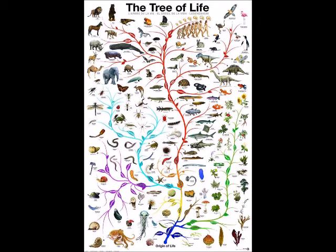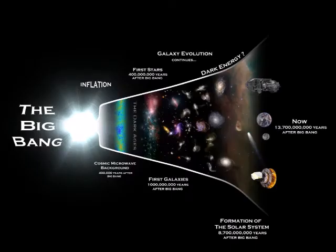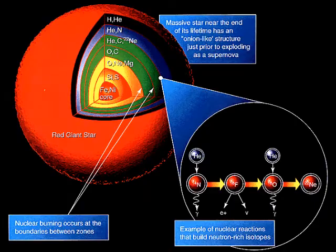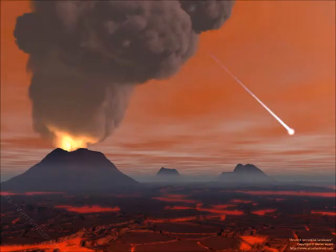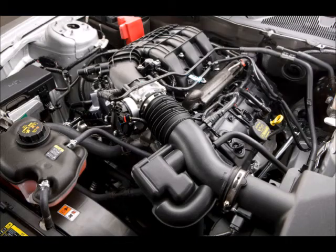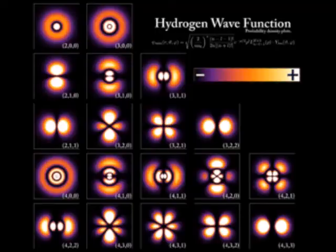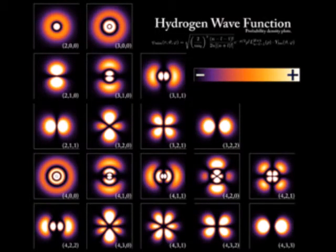Biological evolution is defined as genetic change in a population over time, or change in allele frequencies in a population over time — either is correct. How biological evolution works has nothing to do with how the universe originated, how matter is synthesized from stars, or even how life started. The definition includes the word population, meaning there was already a population to begin with. Kent Hovind and others say the only way to study biological evolution is to first understand how the universe came into existence — but that's equivalent to saying you can't fix a car engine until you understand quantum mechanics first. It's totally ludicrous.